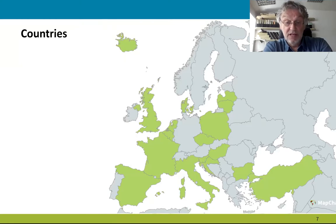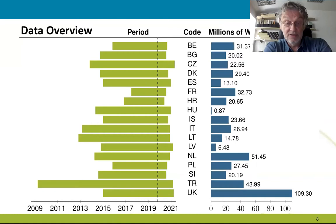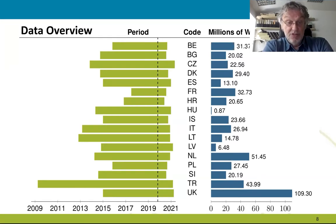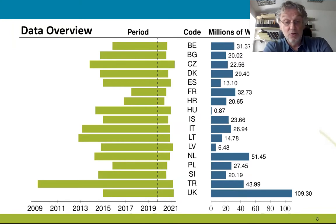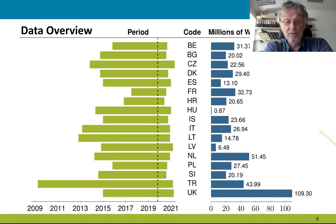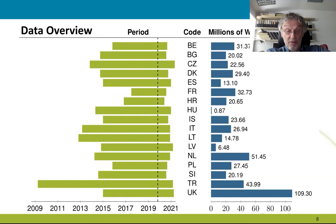These are the countries which took part in the ParlaMint project. These are the corpus codes and the periods they cover. We weren't too strict as long as they contained the COVID period — marked by a dotted vertical line at around November 2019, the start of the COVID period — and we wanted a bit of historical data to serve as reference corpora, so people can compare the pre-COVID and post-COVID portions. The size of the corpora varies considerably, from English at 100 million words down to Hungarian at only a couple of hundred thousand words.